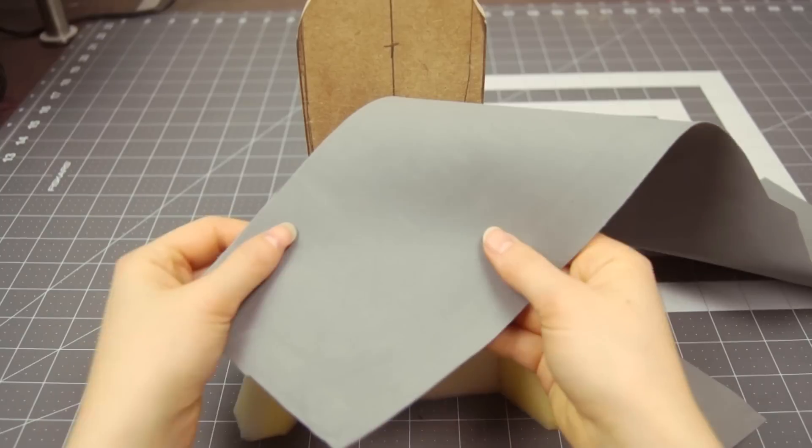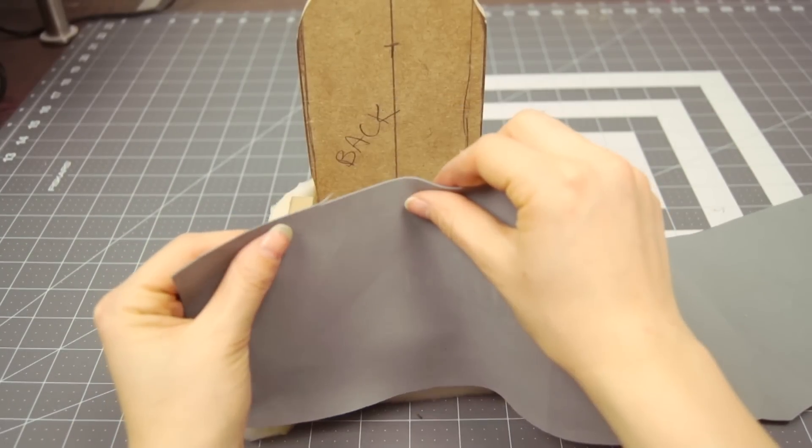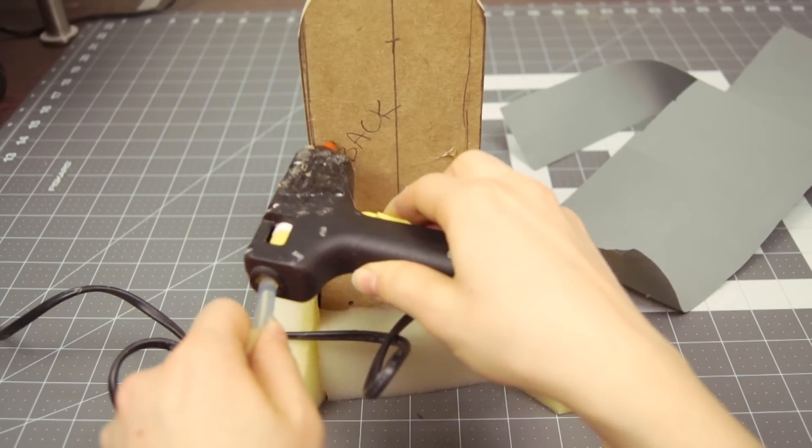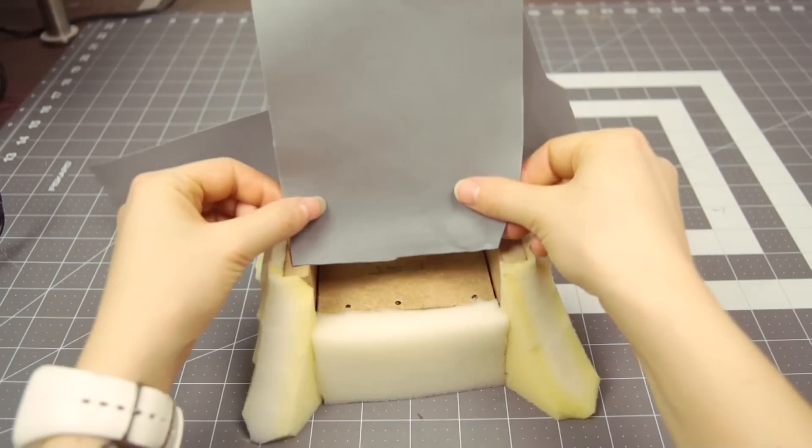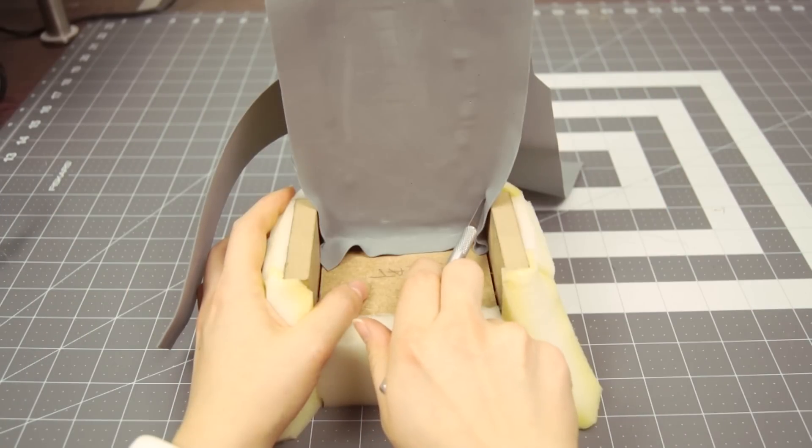On top I'll add a layer of thin grey foam which will even out all the surfaces. I did it only at the back first because I have to adjust the placement of the cable which I'll show you in a second.